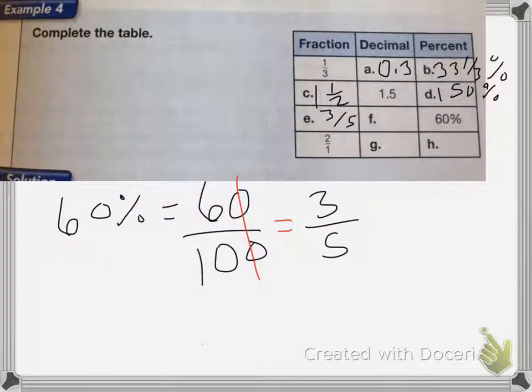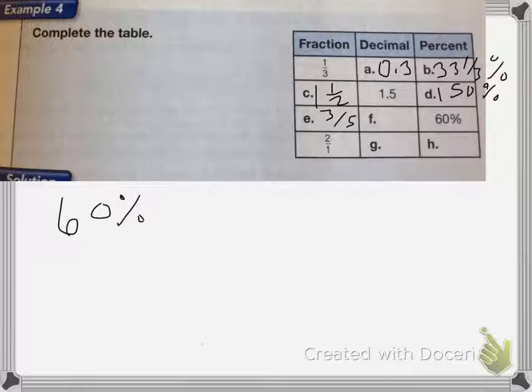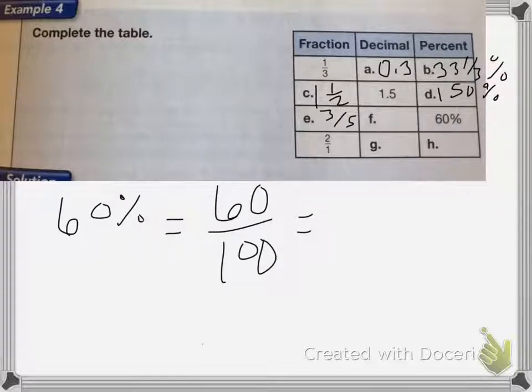If I want to change that to a decimal, I again start with the 60%. And that is the same as 60 over 100, which I can write as a decimal. It's going to be 0.6, because those zeros will cancel. It'll be 6 tenths.